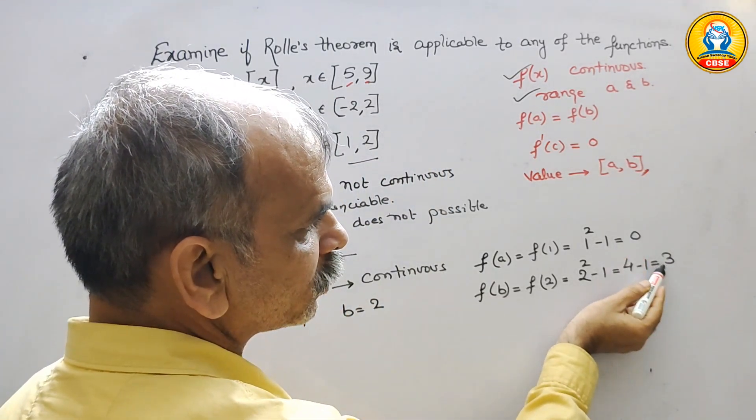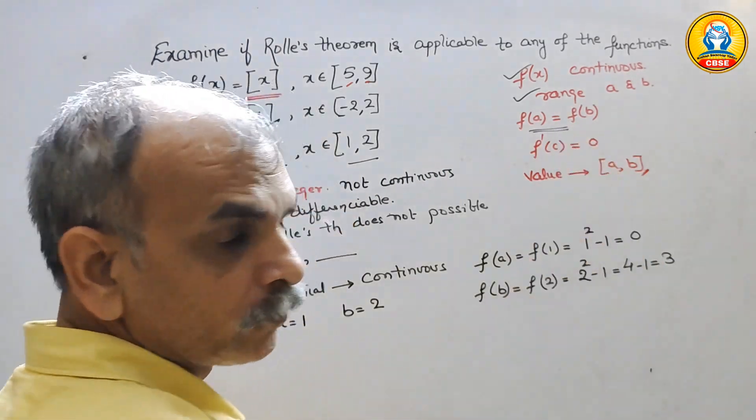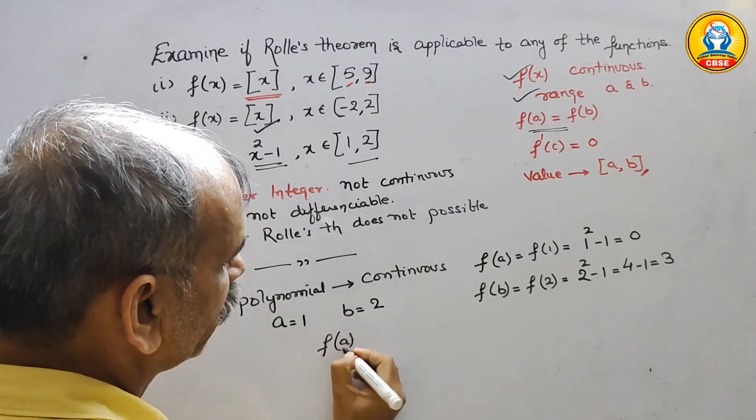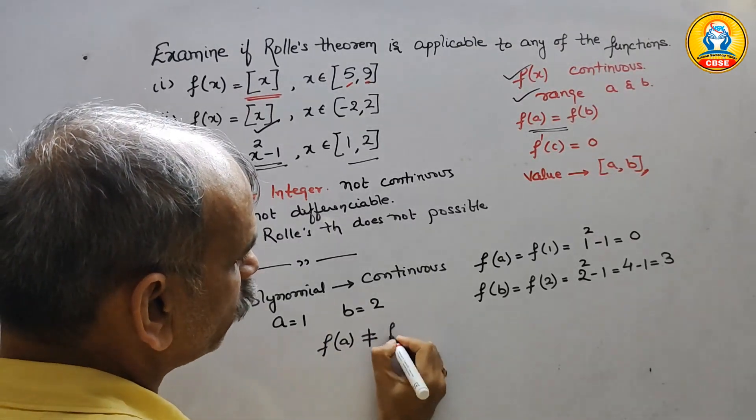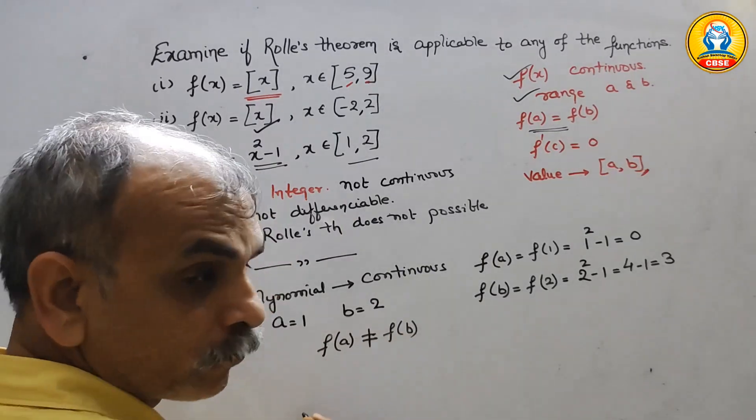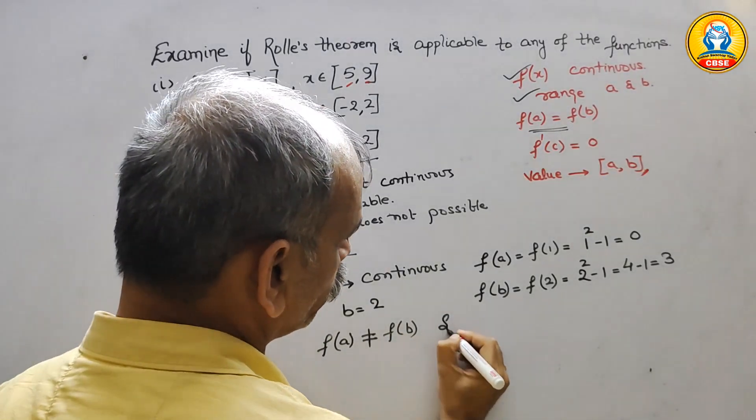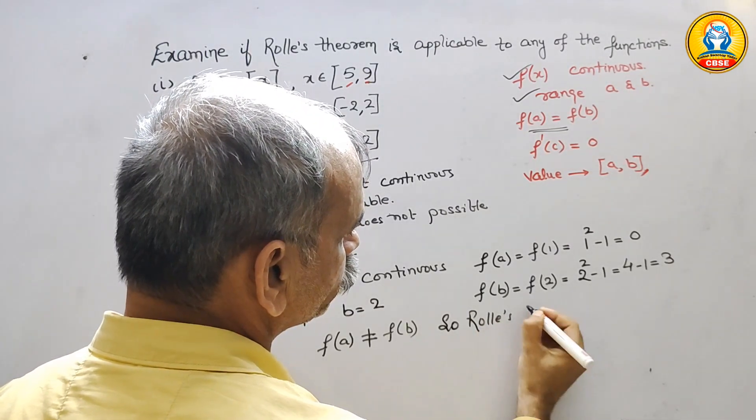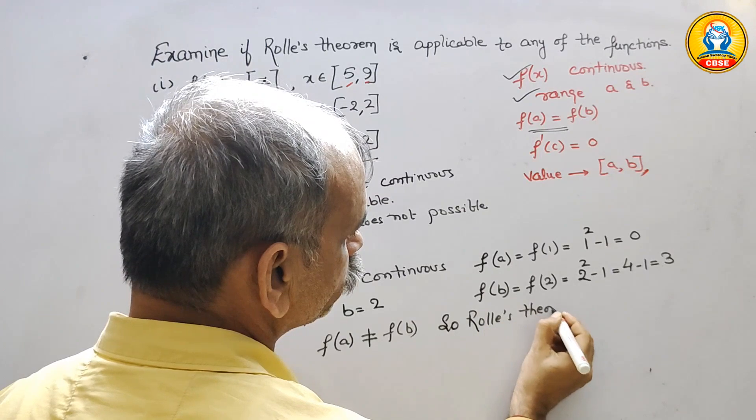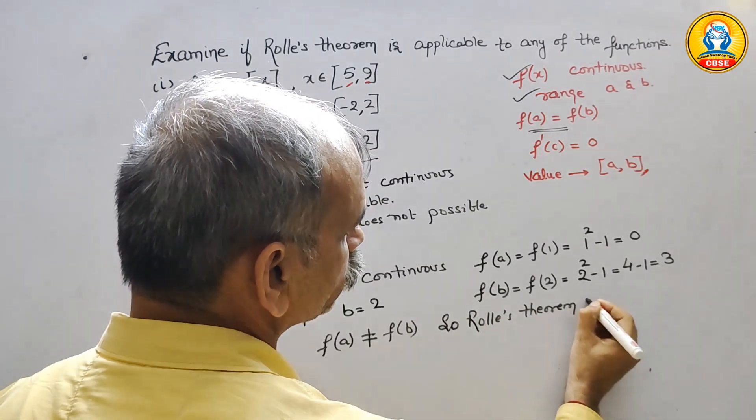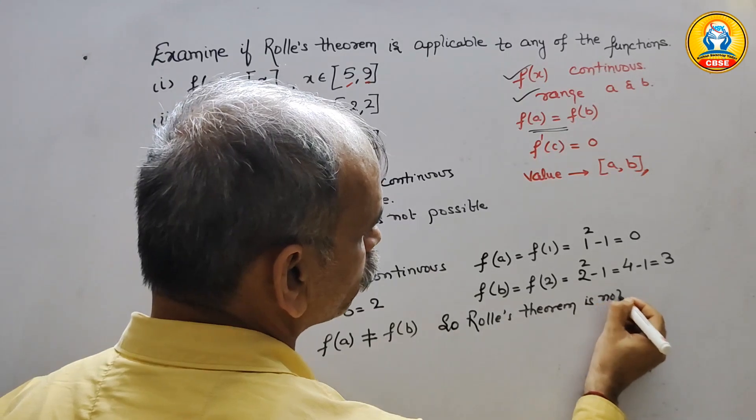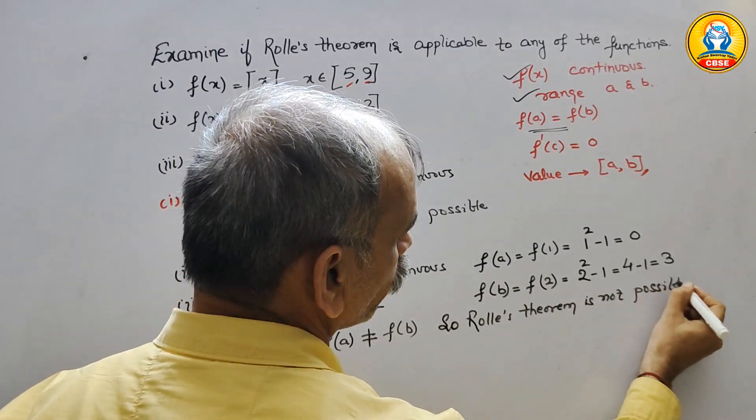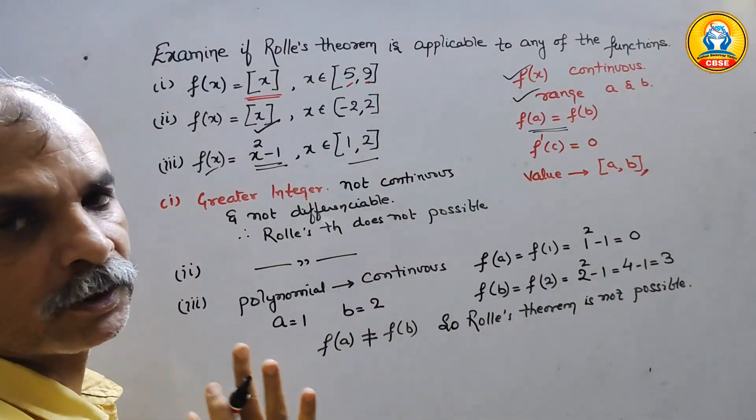Here comes 0. Here comes 3. They are not equal. Now we can say F(A) is not equal to F(B). Rolle's theorem is not possible. Like this we have to do it.